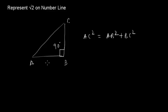If AB is equal to 1 and BC is equal to 1, then we can say 1 square plus 1 square is equal to AC square, which is equal to 2. Then AC is equal to under root 2.